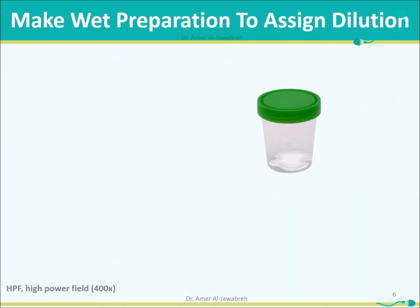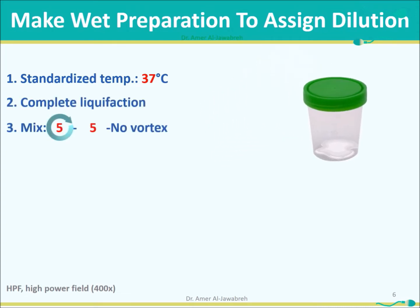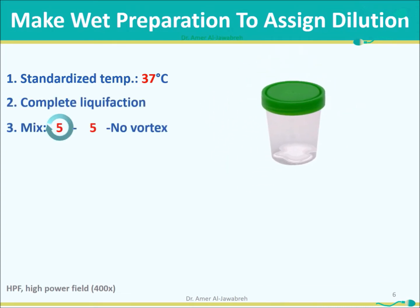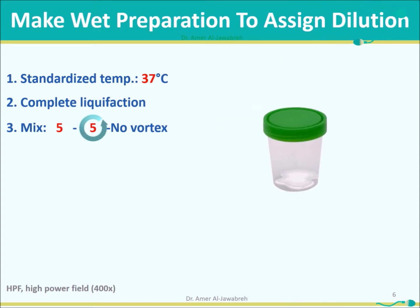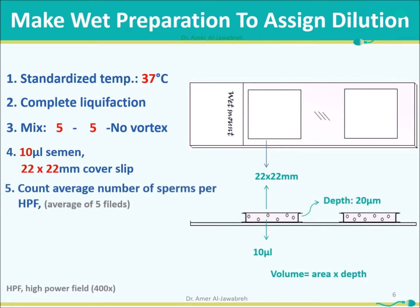Make a wet preparation to assign dilution. Standardize temperature to 37 degrees centigrade. Wait until complete liquefaction. Mix well: five times to the left, five times to the right. Take 10 µL of semen and use a 22 x 22 mm coverslip. Count the average number of sperms per high power field — an average of five fields.